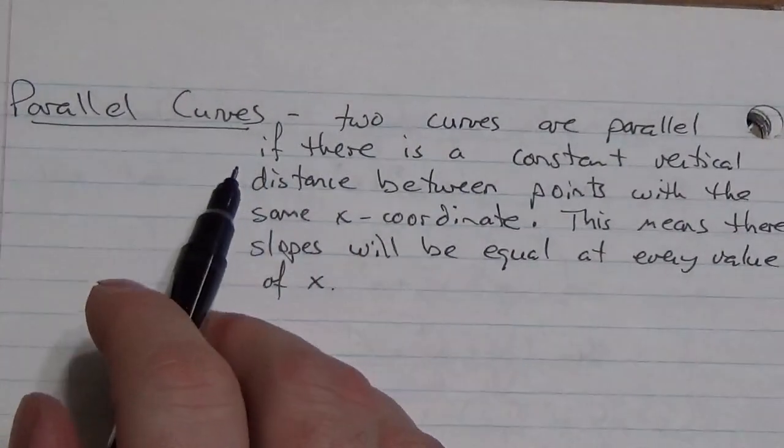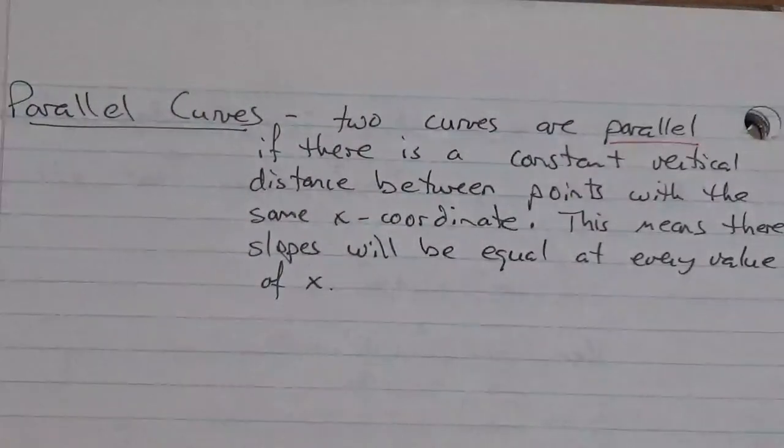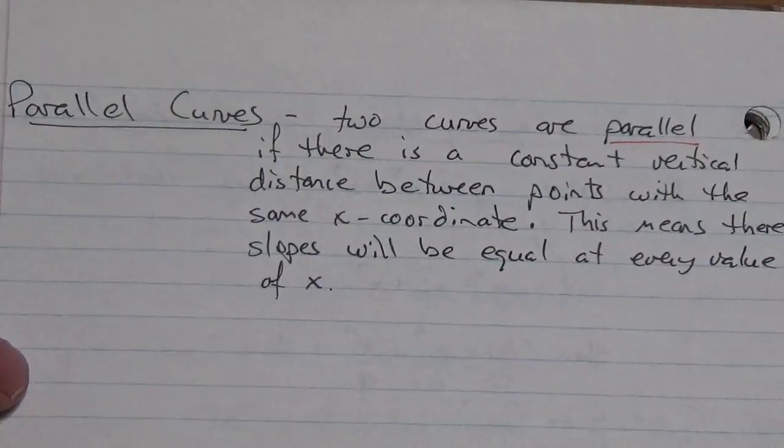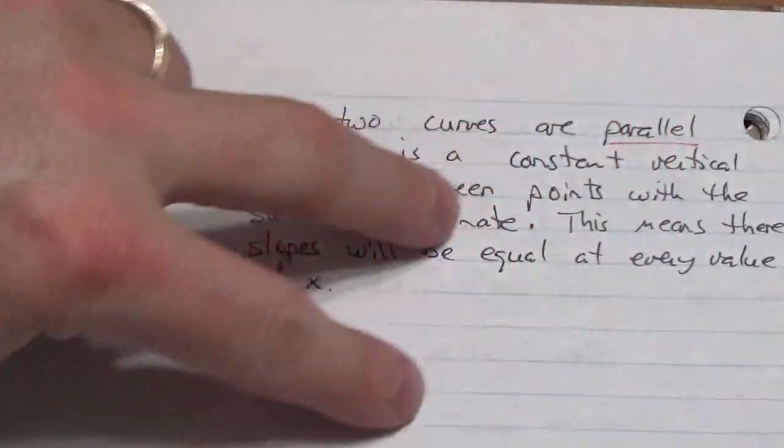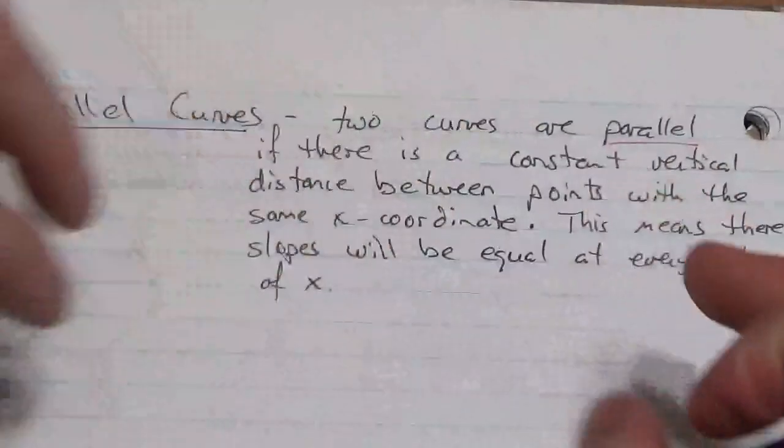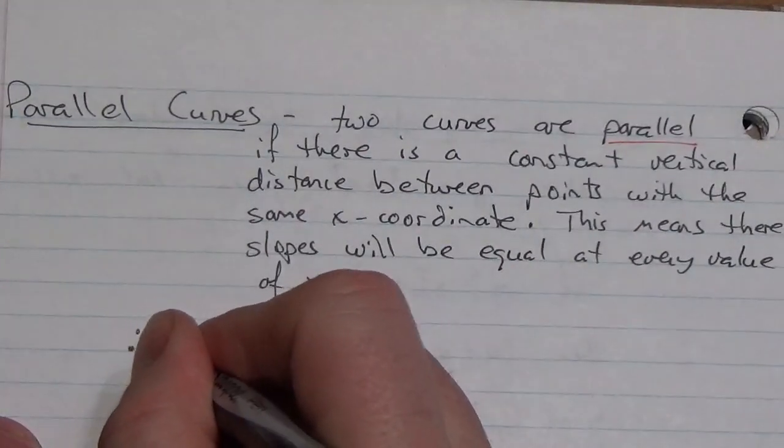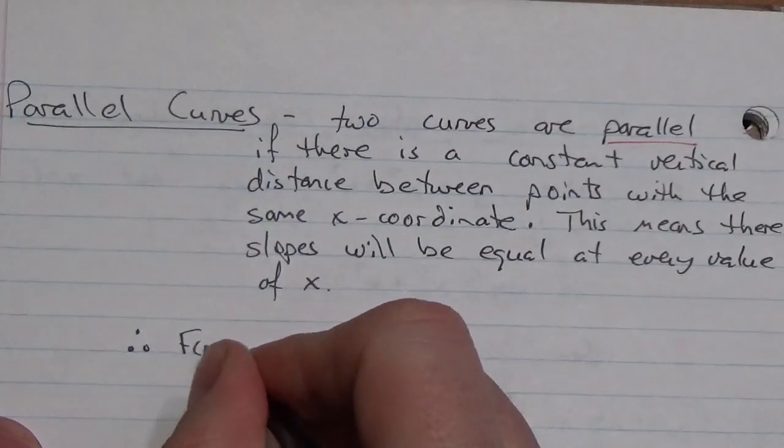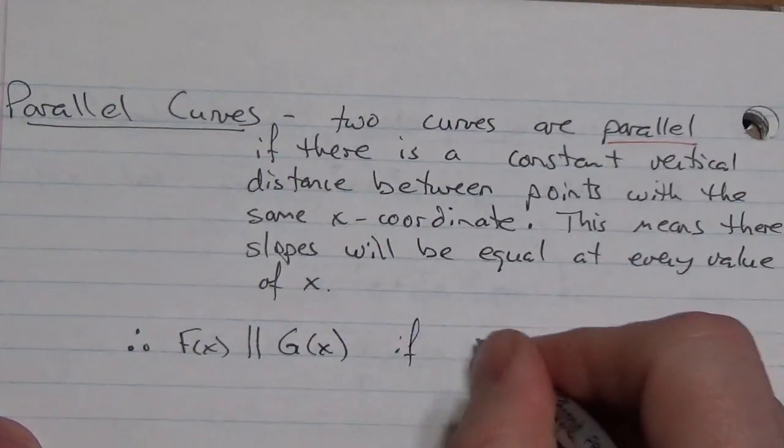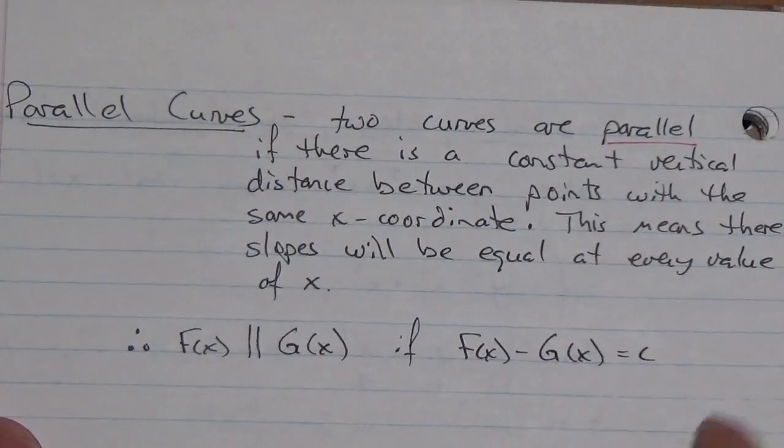Another little definition here: we're going to look at parallel curves. Two curves are parallel if there's a constant vertical distance between the points with the same x-coordinate, which means that their slopes will be equal at every value of x. Now, if you just think about it, that's like doing this, right? If every time you look at an x-coordinate, there's a constant distance between the y-coordinates, we call them parallel. Basically, they're going to have the same slope. So, i.e., you can look at it like this: function f(x) is parallel to g(x) if f(x) - g(x) = c.